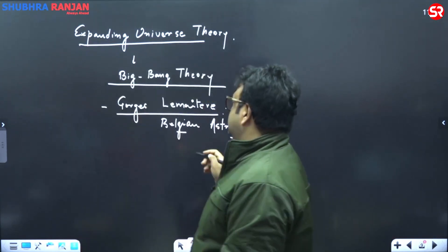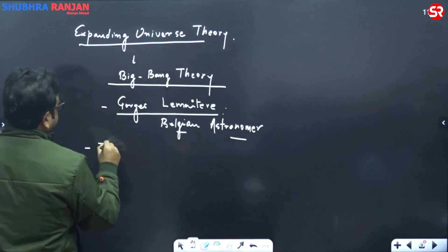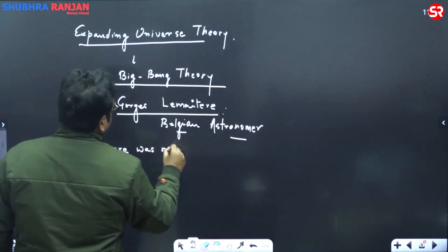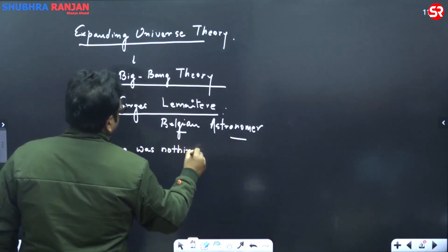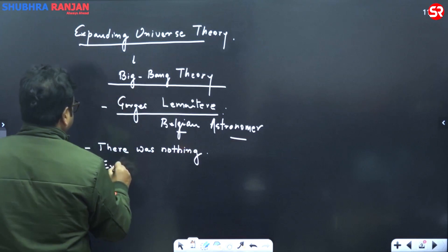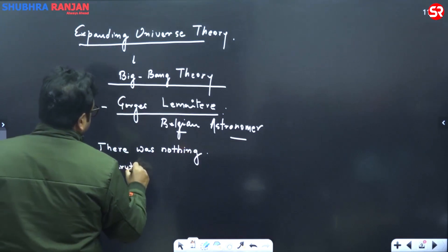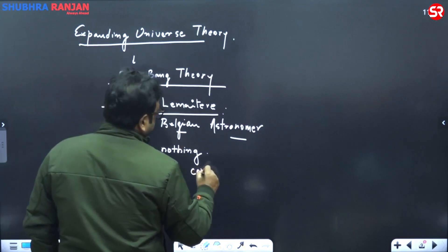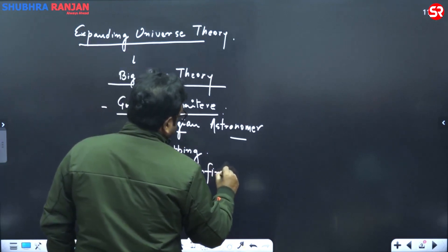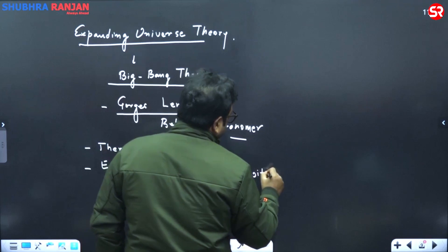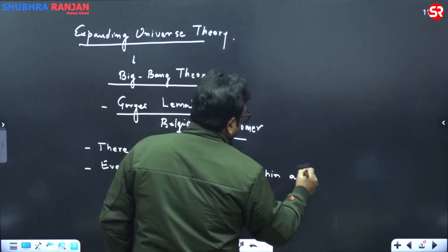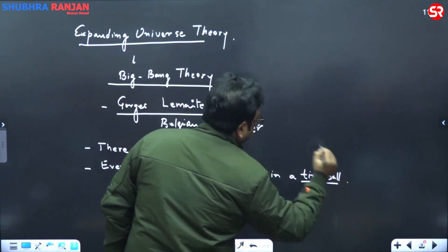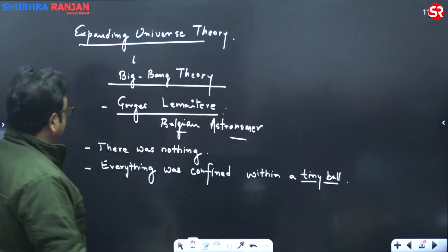So according to this theory, he said there was nothing. Everything was confined within a tiny ball, confined within a tiny ball and he named it singularity.